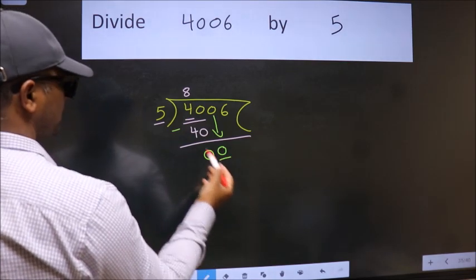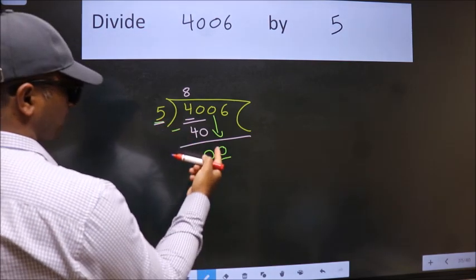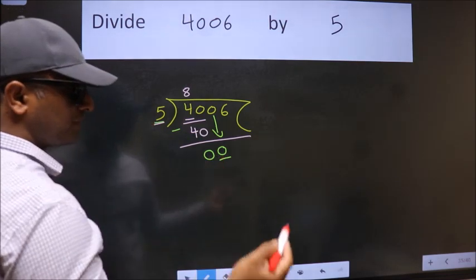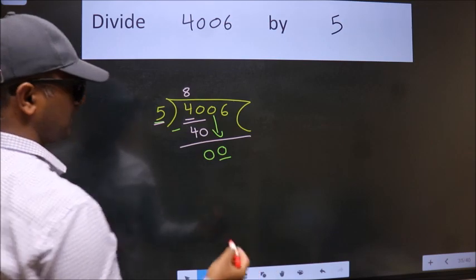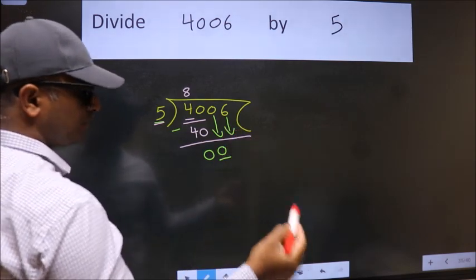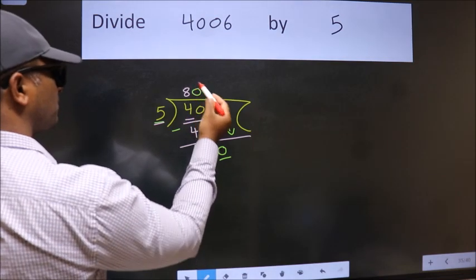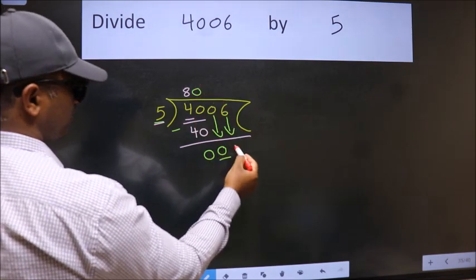Now here we have 0 and here 5. 0 is smaller than 5, so we should bring down the second number. The rule when bringing down the second number is to put 0 here. Then only we can bring this number down.